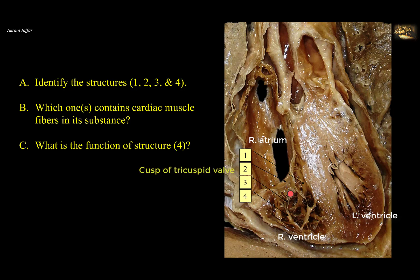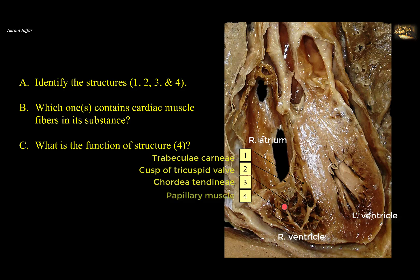The interior of the cavity of the right ventricle shows a series of muscular ridges called the trabeculae carneae, indicated in 1. The edges and inferior surfaces of the cusps of the tricuspid valve receive attachments of inelastic cords, labeled as 3. These are called the chordae tendineae. These chordae tendineae are attached on one side to the cusp of the atrioventricular valve, the tricuspid valve in this case, and on the other side to the tip of a papillary muscle. One of the papillary muscles is marked 4.